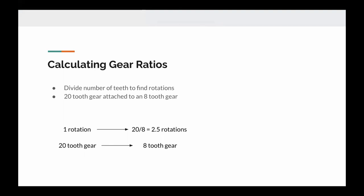For example, if you had a 20-tooth gear attached to an 8-tooth gear where the 20-tooth gear is attached to the motor and it's moving, then one rotation of the 20-tooth gear or one rotation of the motor will result in 20 divided by 8 rotations of the 8-tooth gear. So the 20 comes from the 20 teeth on the first gear and the 8 comes from the 8 teeth on the second gear, and dividing them gives 2.5 rotations, which is the relative number of rotations to one rotation of the 20-tooth gear.